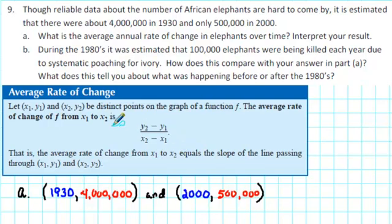In order to answer question A, we have to recall what average rate of change is. Average rate of change is a ratio where we divide the change in the output by the change in the input. In this case, we want to find the average annual rate of change in elephants over time. So we will need to find the change in the number of elephants and divide by the change in the amount of time.